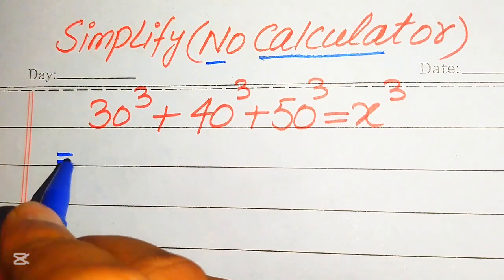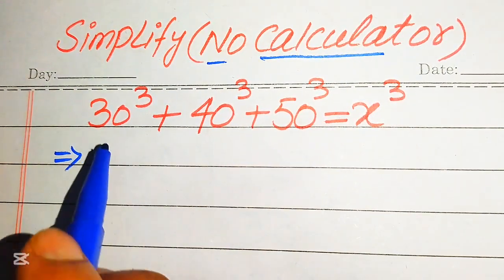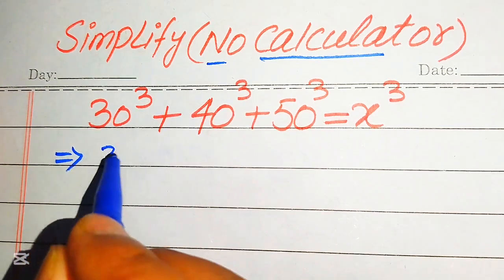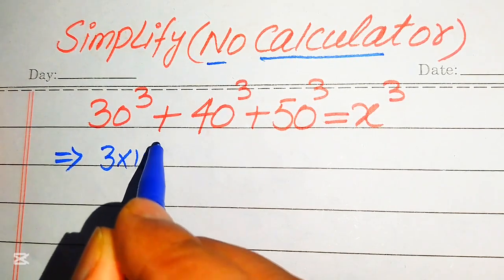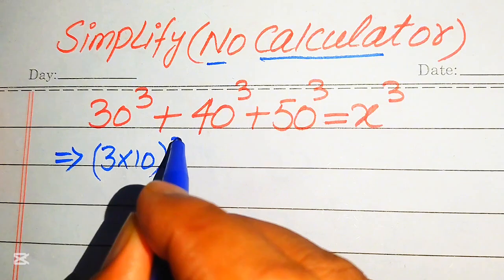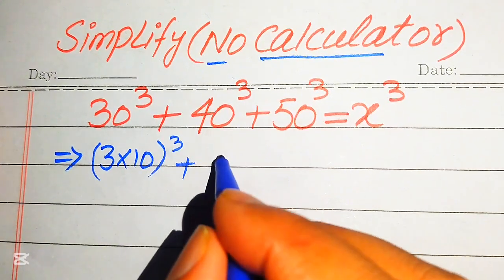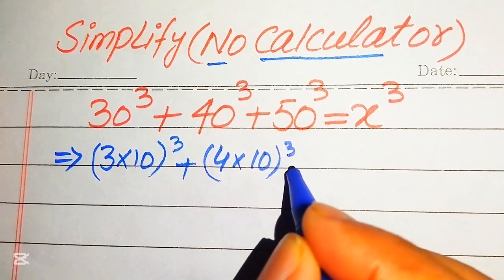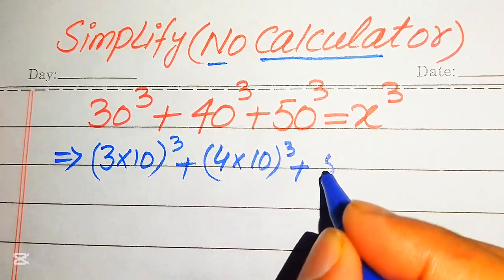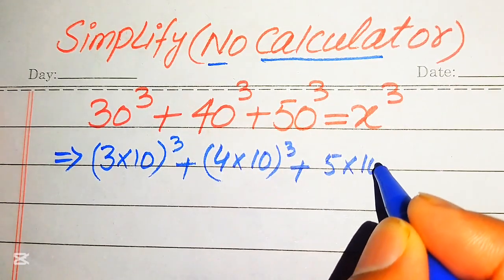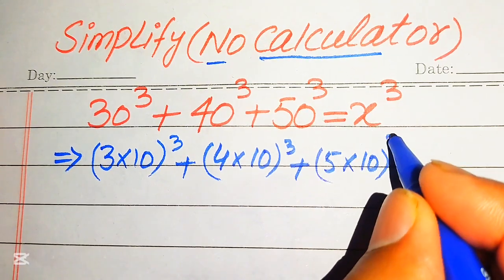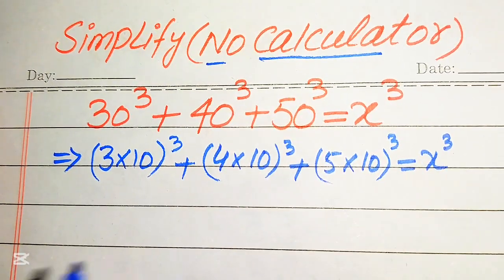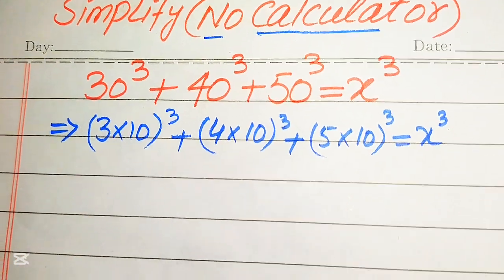First, we rewrite this equation. We write 30 as 3 multiplied by 10, whole cubed; plus 40 as 4 times 10, whole cubed; plus 50 as 5 times 10, whole cubed; and this whole equation equals x cubed.